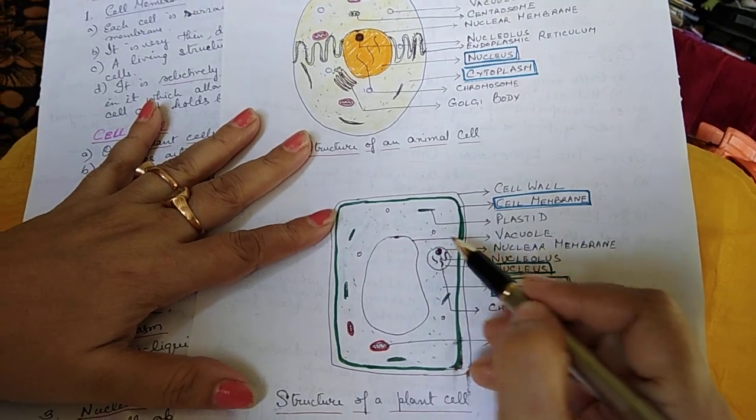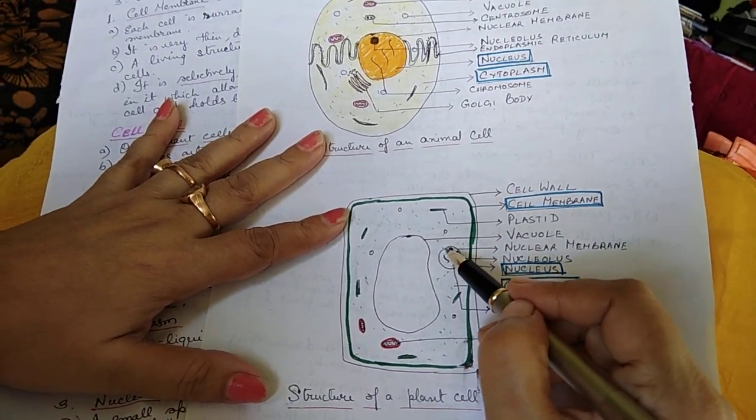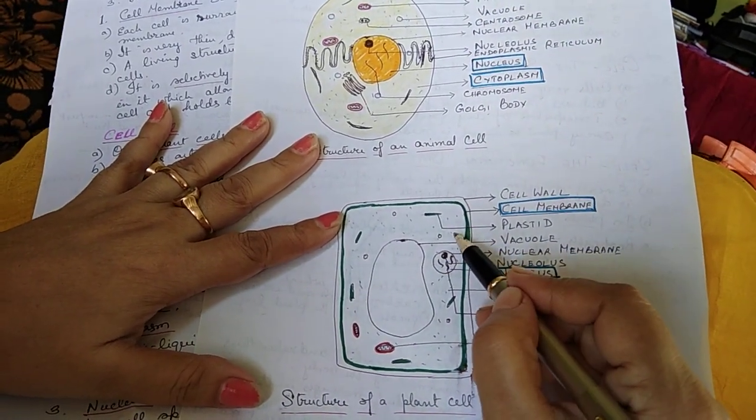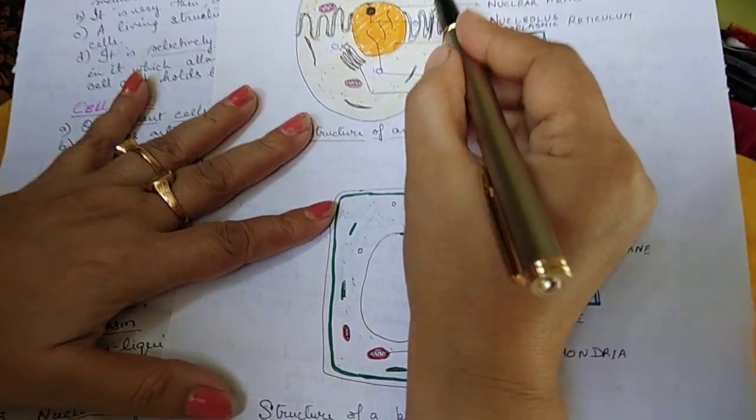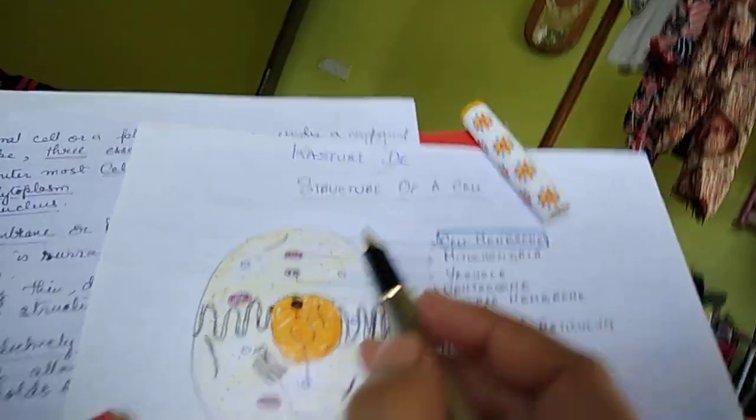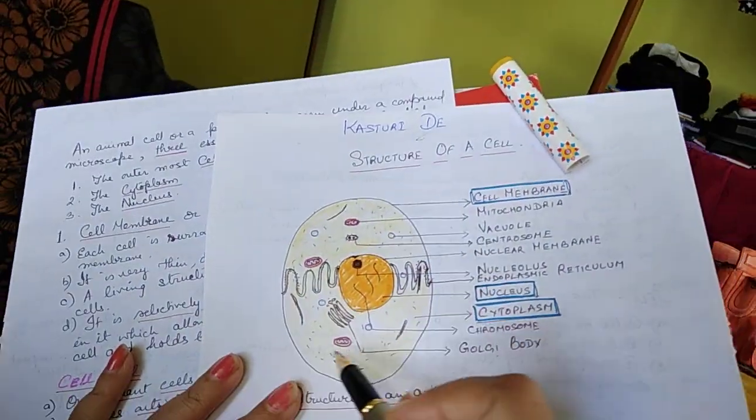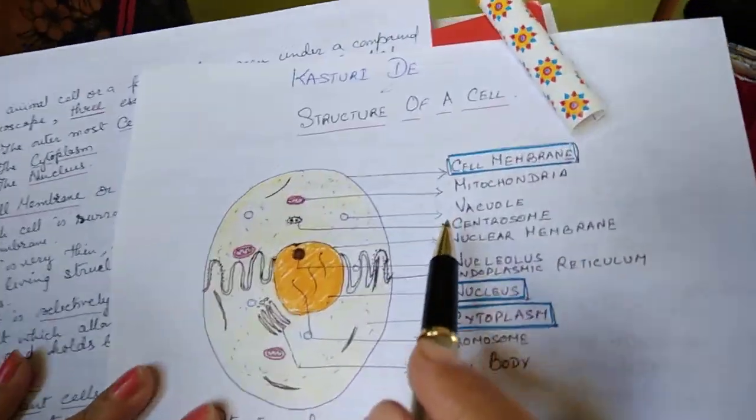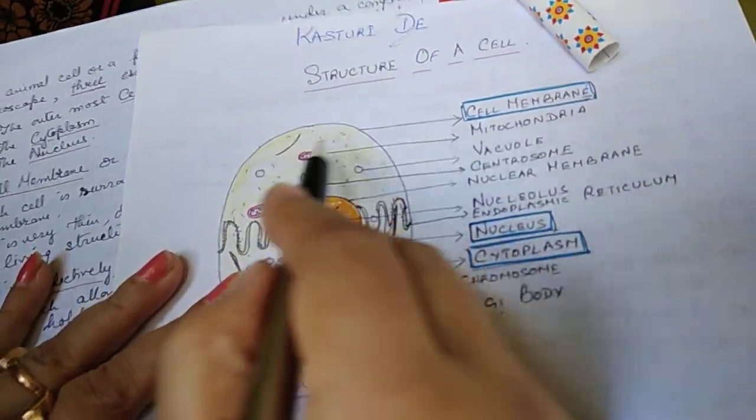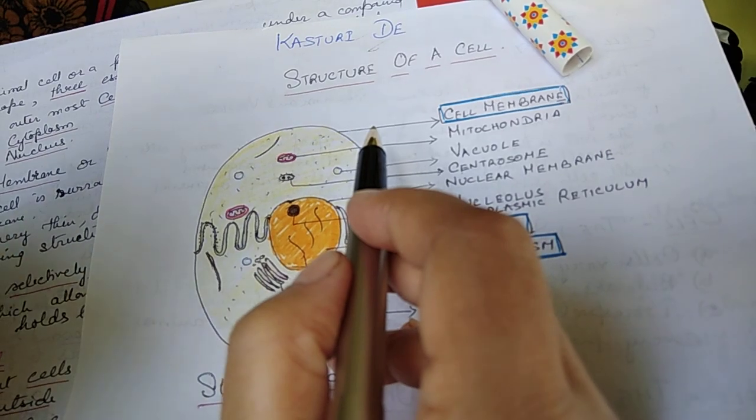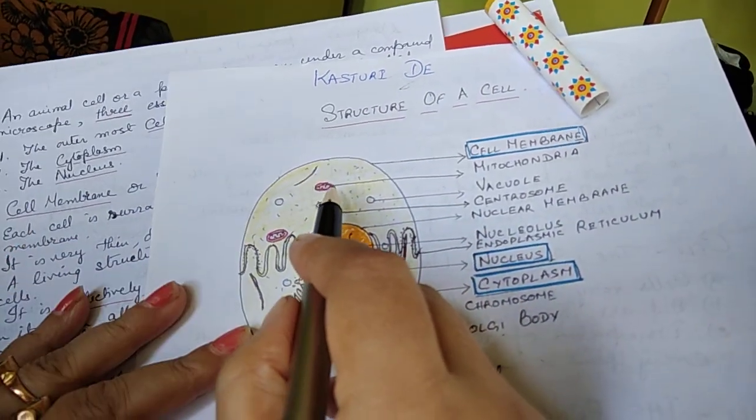In both cases these are there, this is the nucleus and this is the cytoplasm. Now in the cytoplasm there are certain organelles present. These organelles are certain structures which are present in the cytoplasm which perform various functions of the cell.